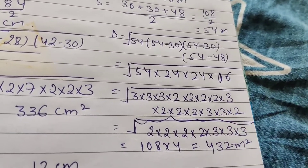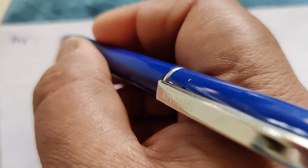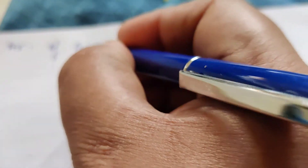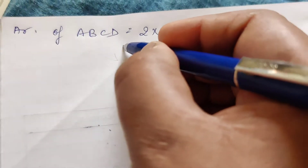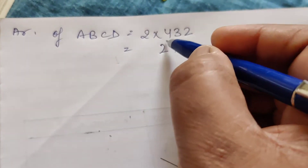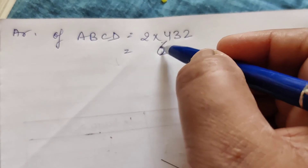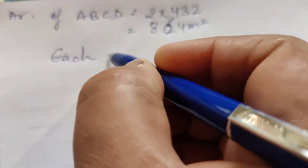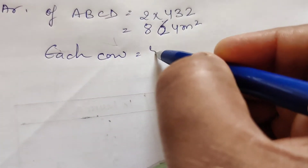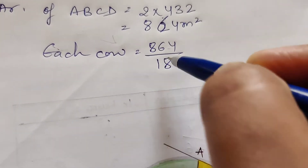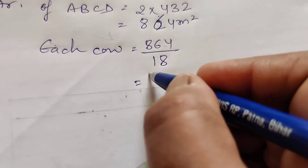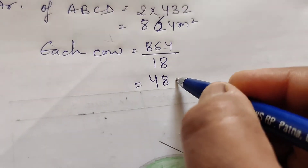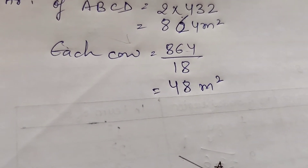The area of rhombus equals 2 into 432, which is 864 meter square. Each cow can graze an area of 864 divided by 18, which equals 48 meter square.